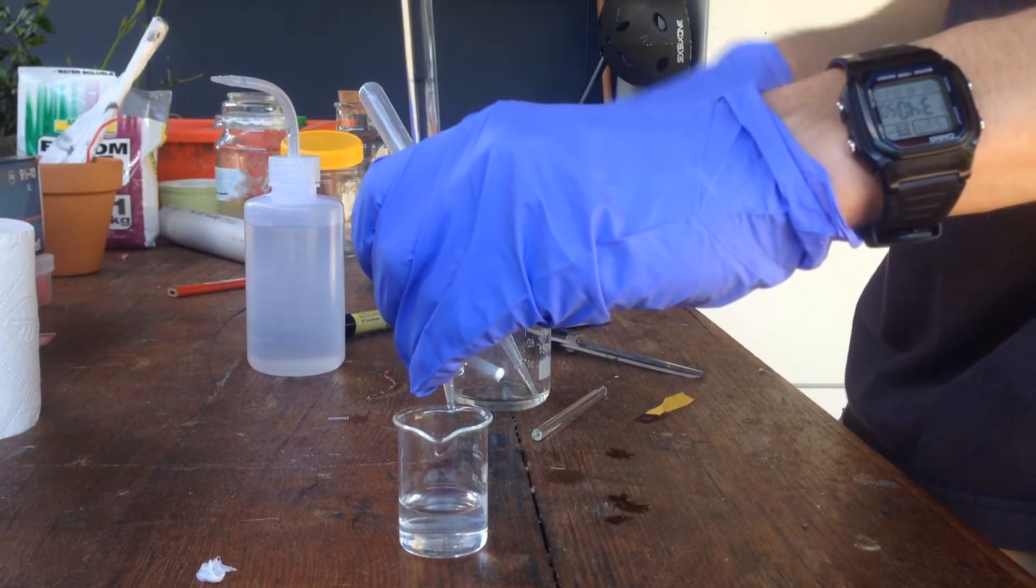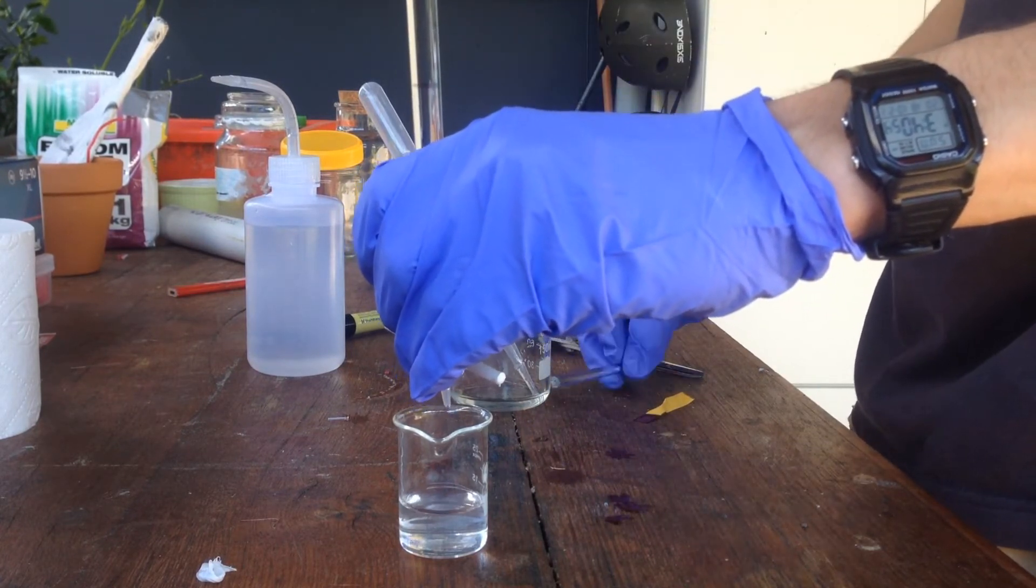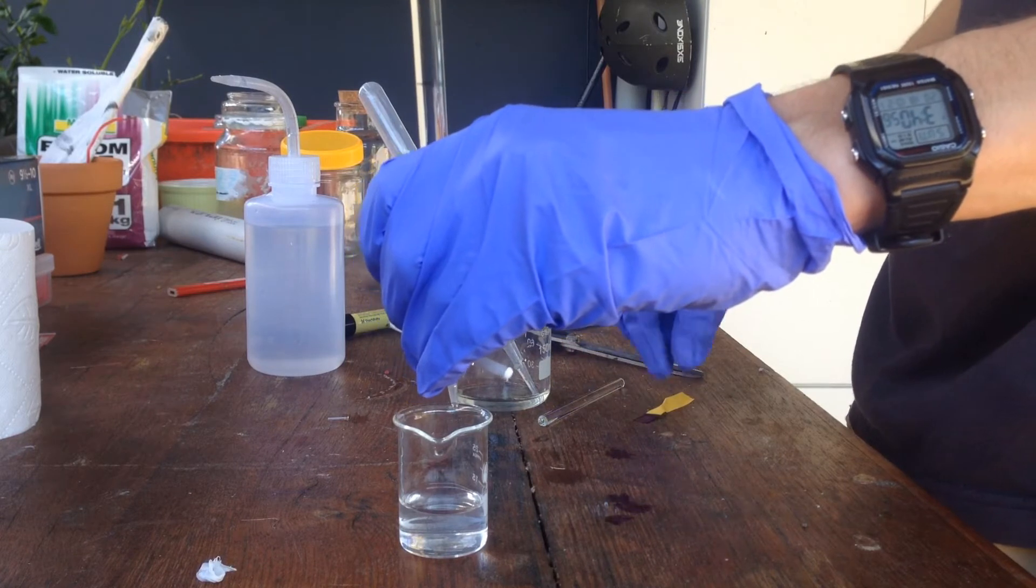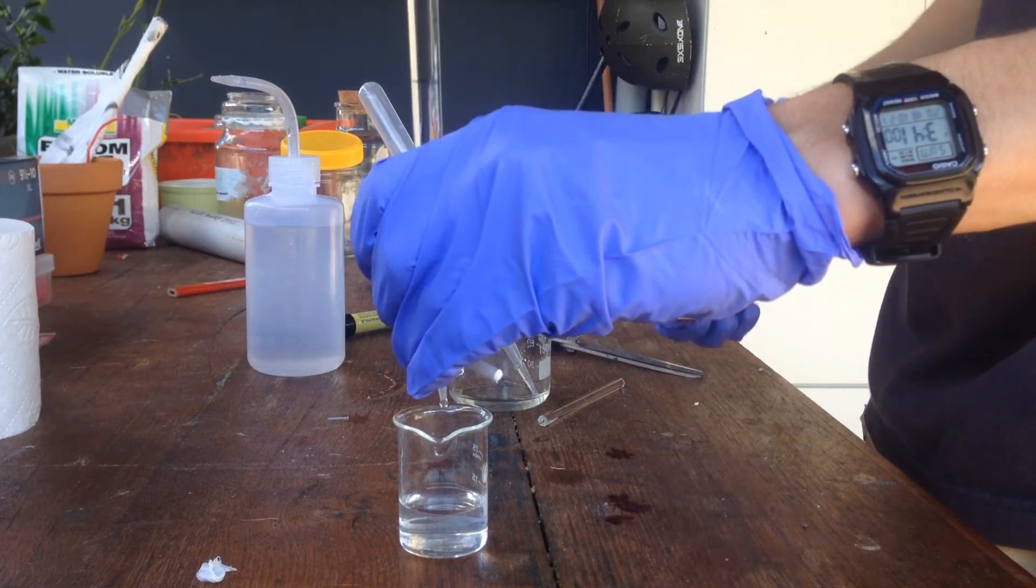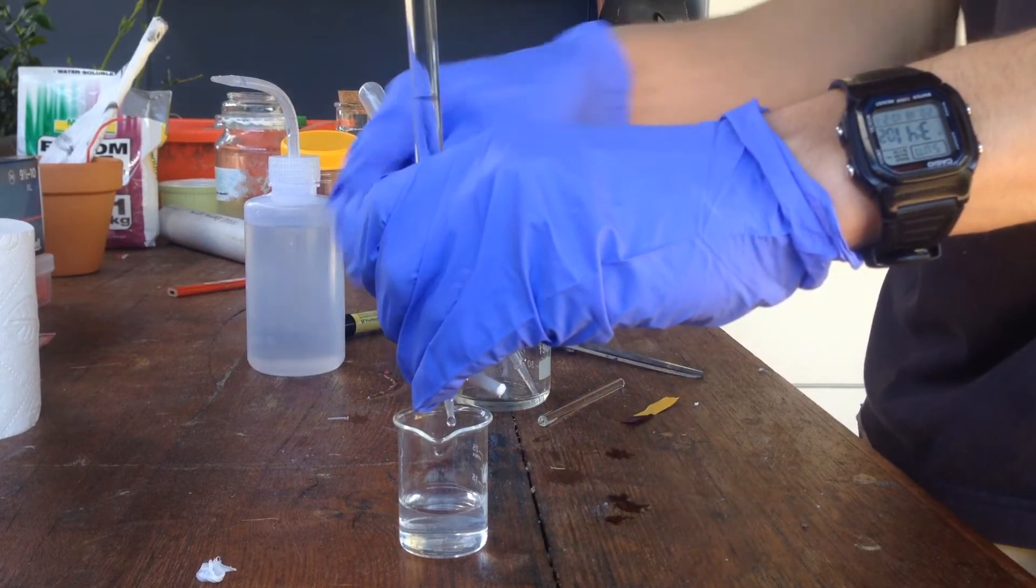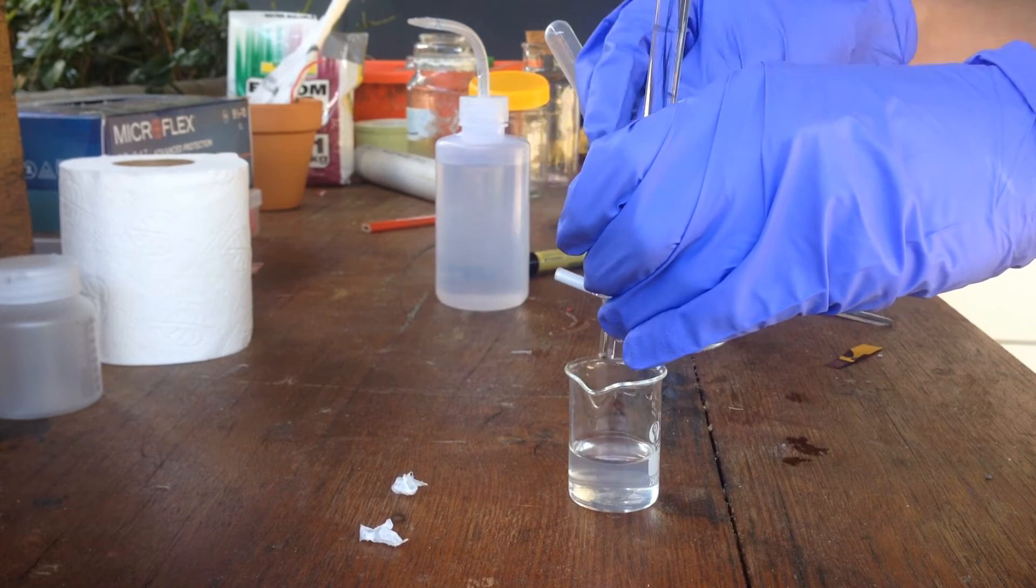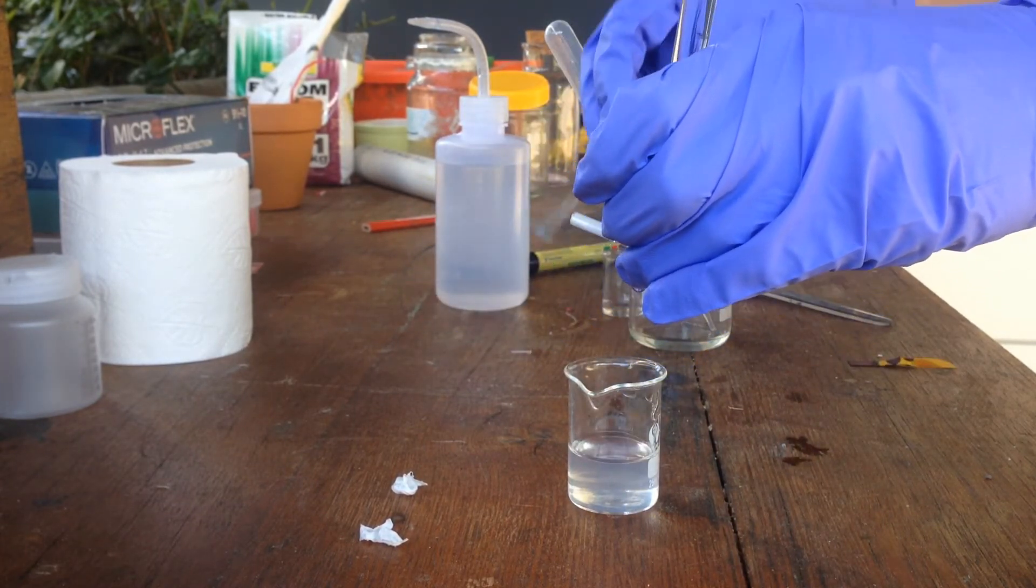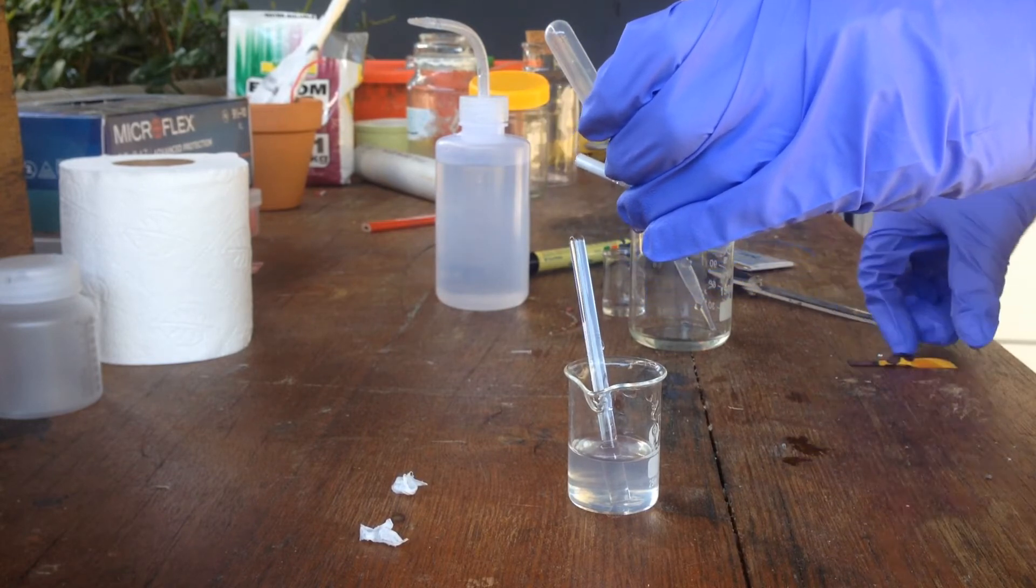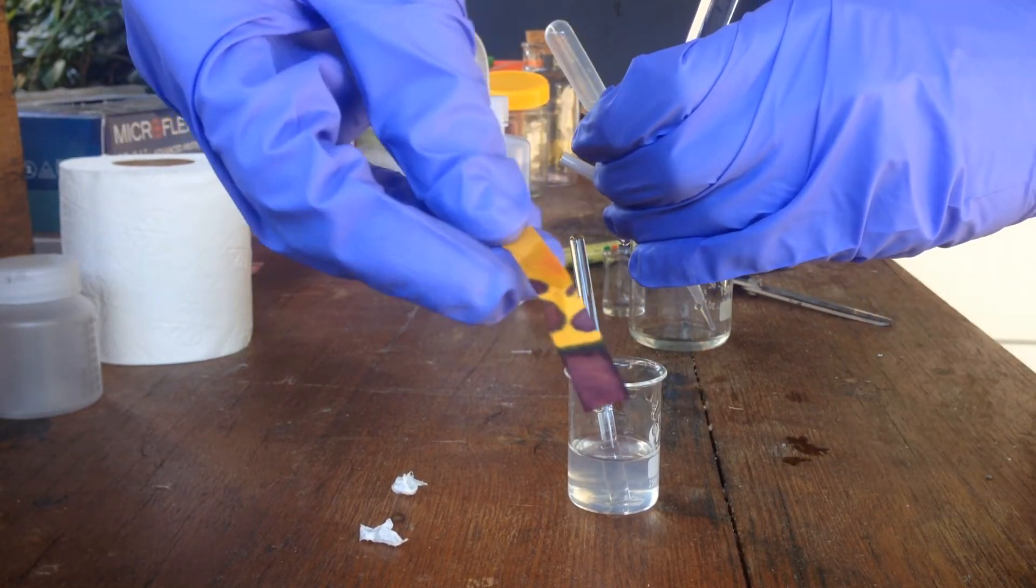And we'll just keep dropping that. I've got it on a slow drip right now. And I'll keep getting bits of the solution and testing it with the pH paper until it reaches pH 7. So the pH paper should go green once we reach a neutral pH.